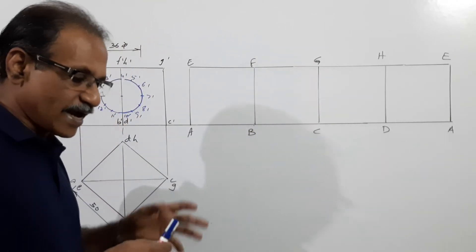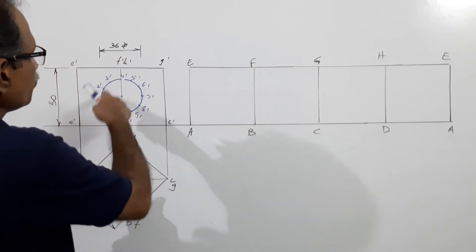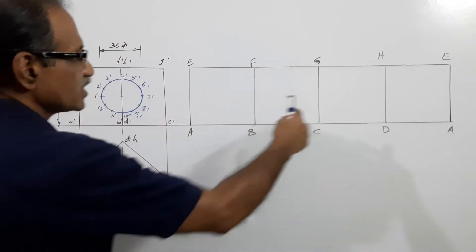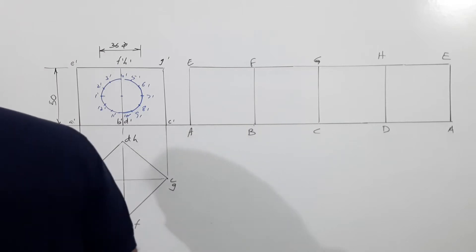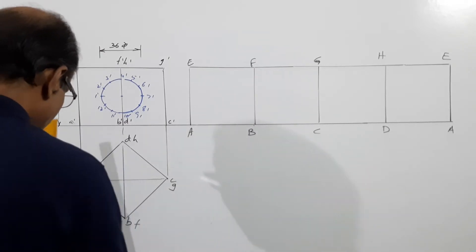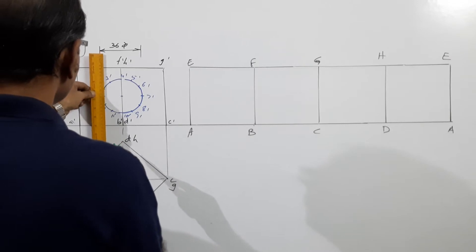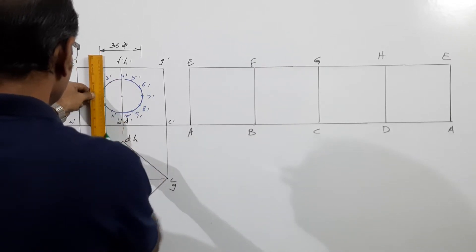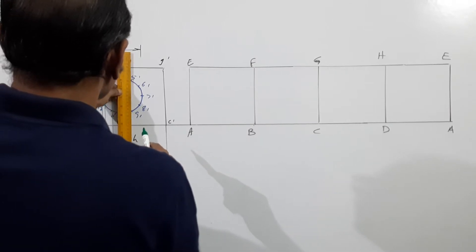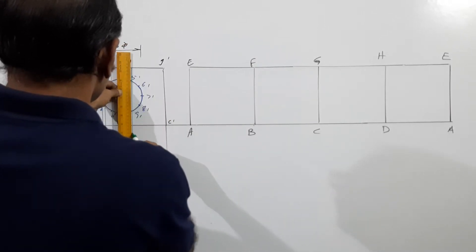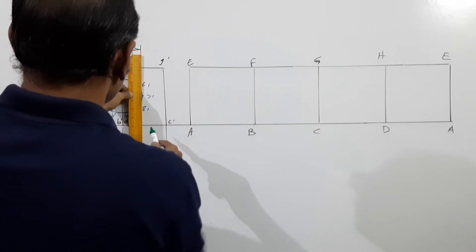Now this hole is to be reproduced at the appropriate points. Mark 1 dash, then 2 dash, 12 dash, then 3 dash, 11 dash, then 5 dash, 9 dash, 6 dash, 8 dash, and finally 7 dash on the plan.